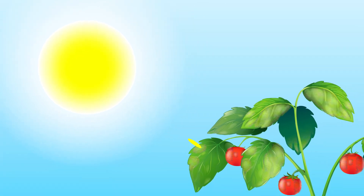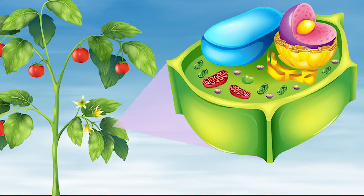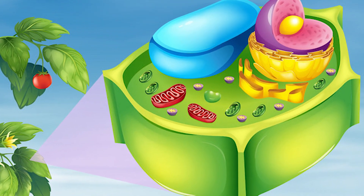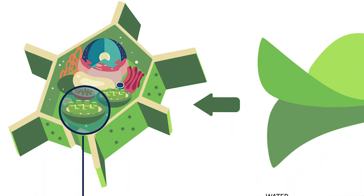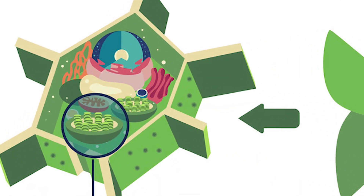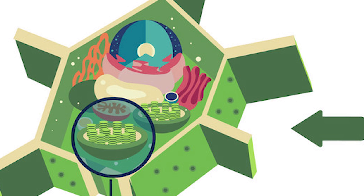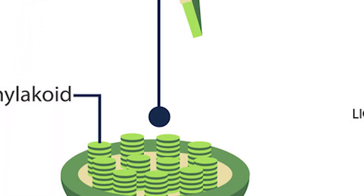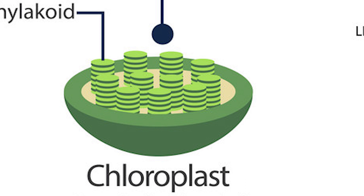Sunlight is absorbed by a green chemical in the leaves. The photosynthesis process takes place in the leaves of plants. The leaves are made up of very small cells. Inside the cells are tiny structures called chloroplasts. Each chloroplast contains a green chemical called chlorophyll, which gives leaves their green color.